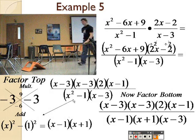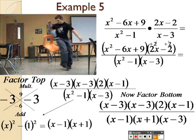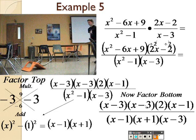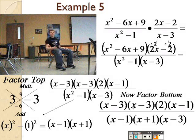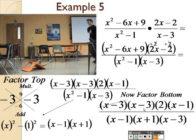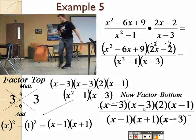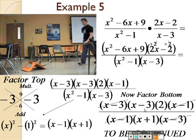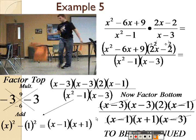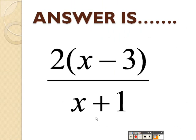Your bottom is x minus 1, x plus 1, and you still have that x minus 3, and you already factored the top. So, now you cross out anything that is on the top and the bottom. Well, I have an x minus 3 on both the top and the bottom. I have an x minus 1 on the top and the bottom. So, all I have left is that 2 times the x minus 3, and I have the x plus 1 there as well, left over.